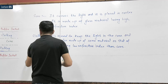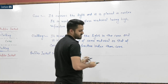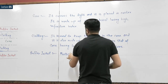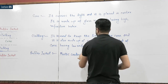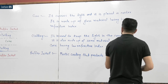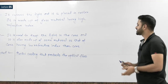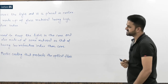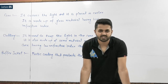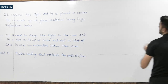The buffer jacket is the plastic coating that protects the optical fiber. So this is the core, cladding, and buffer jacket — the structure of optical fiber. Now we have to consider the parameters involved when the wave travels from a denser medium to a rarer medium, and that is considered in ray optic theory.